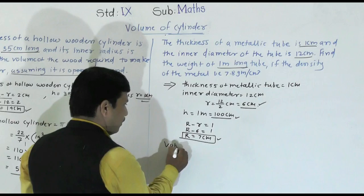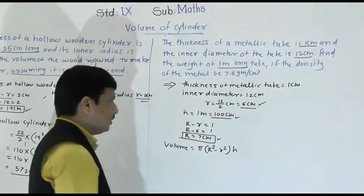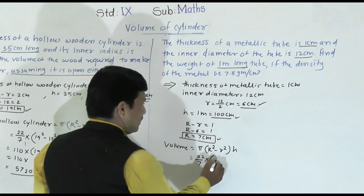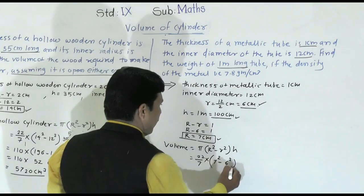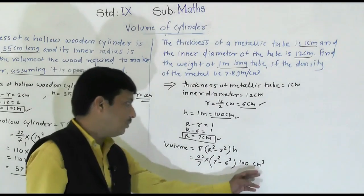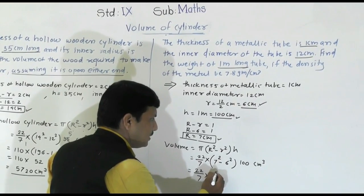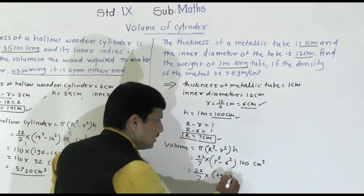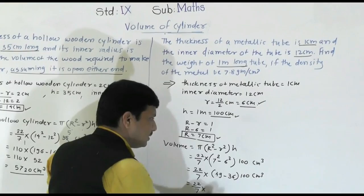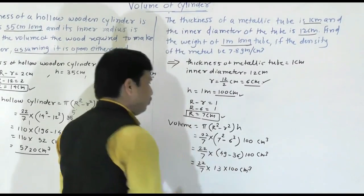Volume of metallic tube equals π(R² − r²) × h equals (22/7) × (7² − 6²) × 100. Calculating: 7² = 49, 6² = 36, so 49 − 36 = 13. The 7 in the denominator cancels with 7 in R: volume equals 22 × 13 × 100 cubic centimeters.